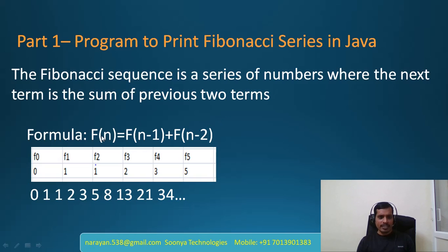For example, based on this formula, if you want to calculate Fibonacci series for 5: f(5) = f(4) + f(3). In this table, f(4) = 3 and f(3) = 2, so 2 + 3 = 5 and we are getting f(5). This is the Fibonacci series.